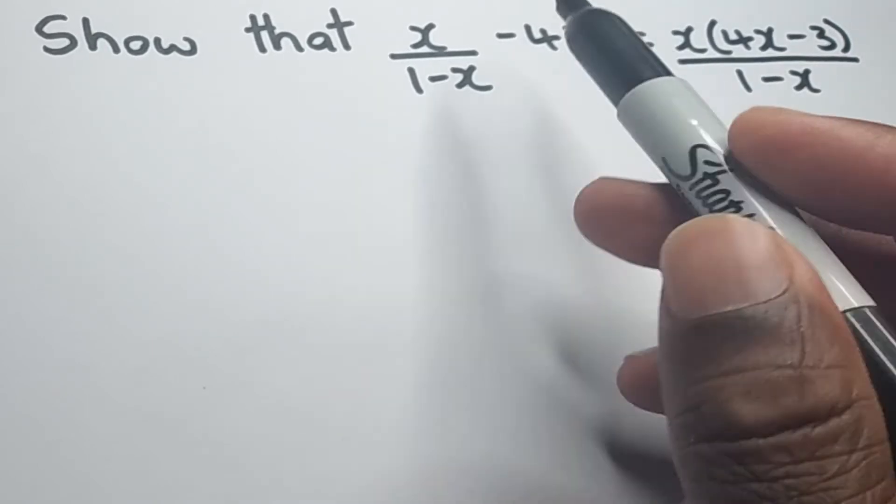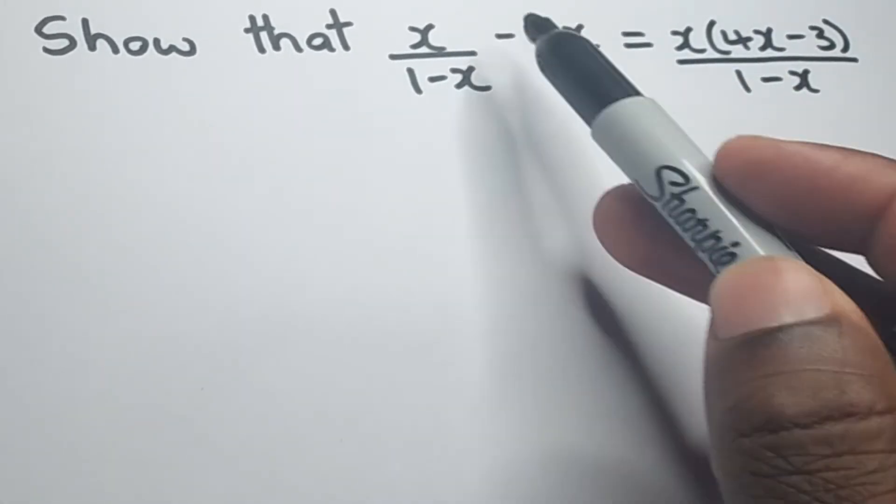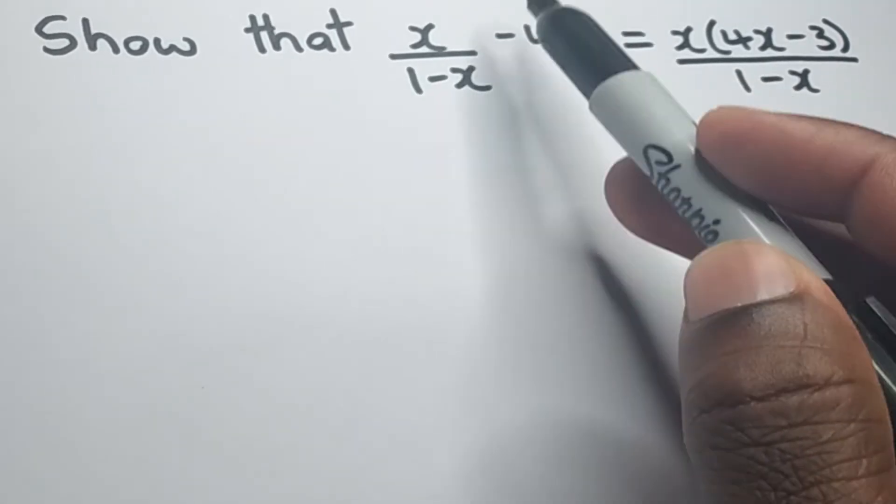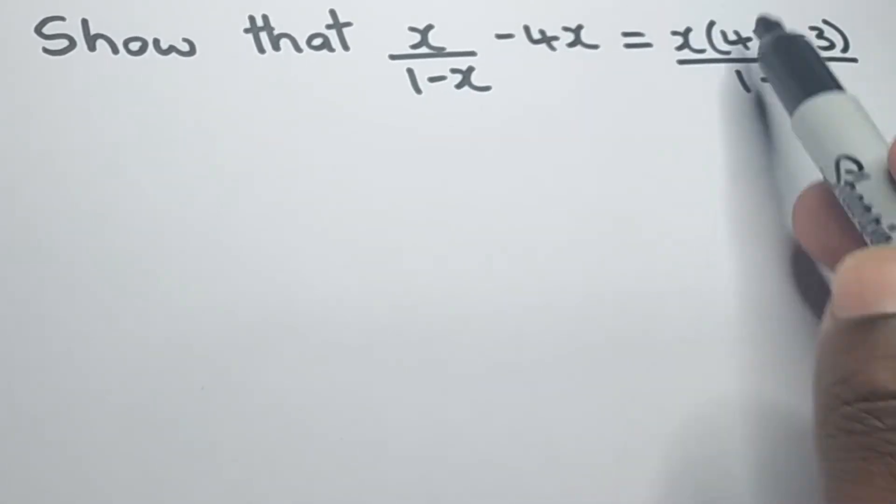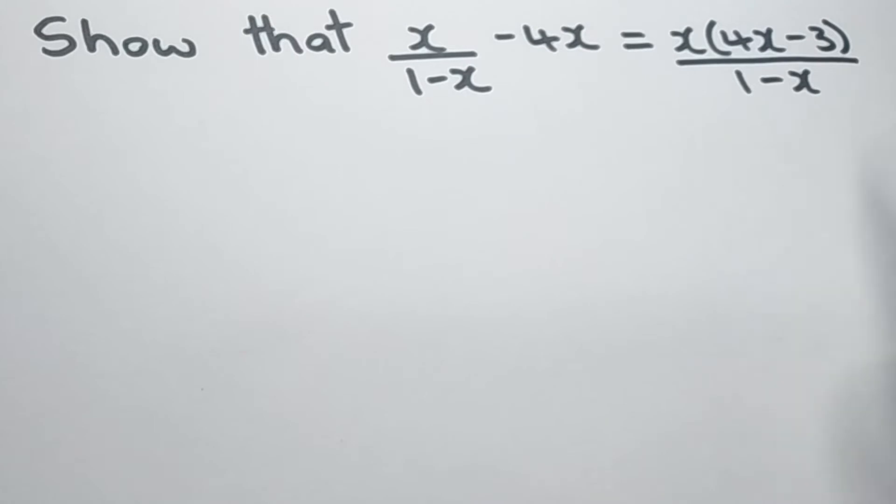So basically what they want us to do is to prove when we simplify the left hand side, which is this over here, we'll obtain this thing right over here on the right hand side.